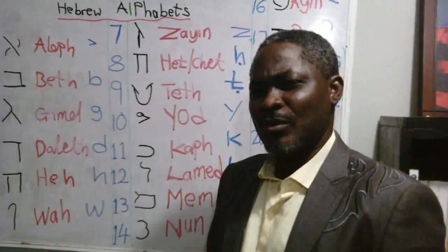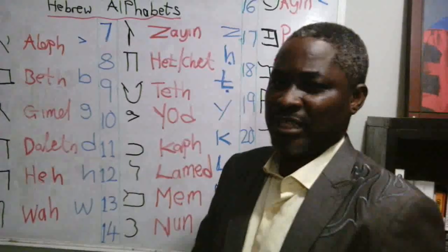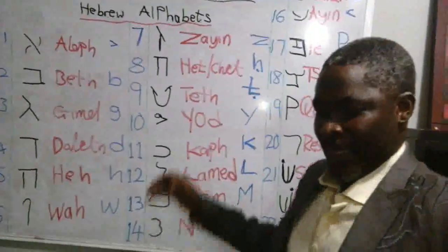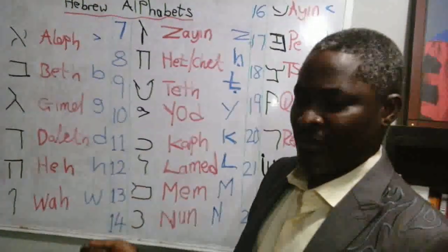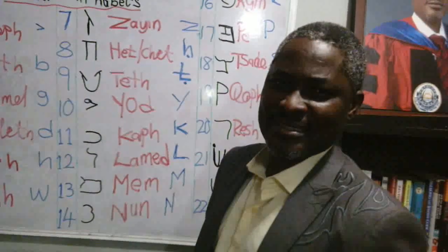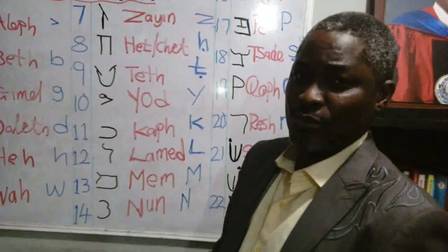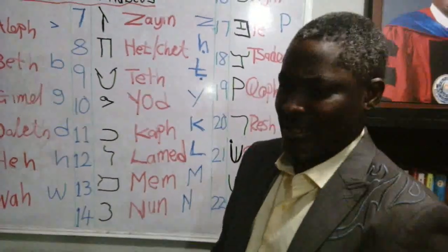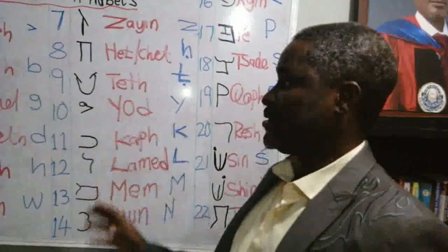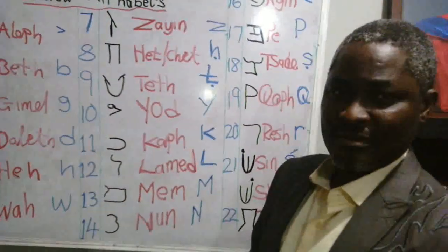Hebrew language is very interesting in that it is a bit different from our normal English language, because it is written from right to left. Hebrew language has 22 alphabets, and these alphabets are the major letters used to write the Old Testament. Originally, when the Old Testament was written, the Hebrew language had no points — no vowels.